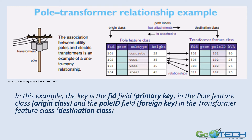Since the pole feature class is what we call the origin class, this FID key is what we also call the primary key. Now if we look at the transformer feature class, we can see it has a pole ID field that stores the same information as the FID field in the pole feature class. Since the transformer feature class is the destination class, this pole ID field is known as the foreign key. By looking at the relationship between FID, our primary key, and pole ID, our foreign key, GIS now knows that transformers 305, 308, and 311 belong to pole number 102, meaning they're attached to that particular pole.